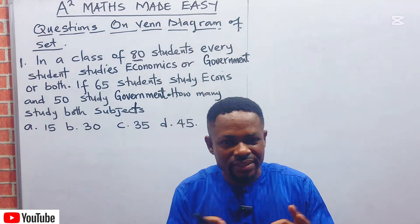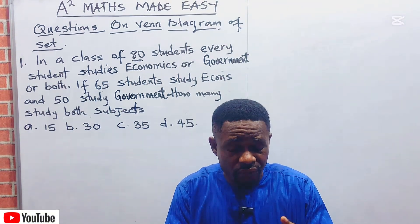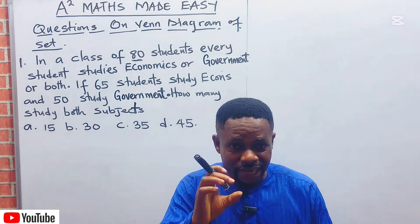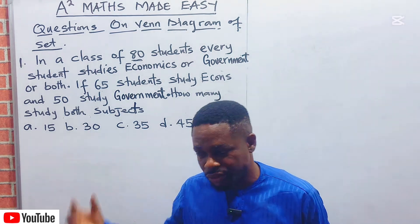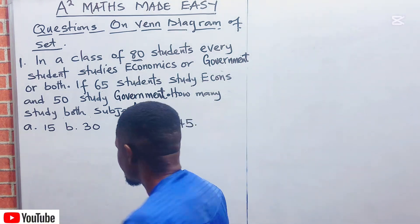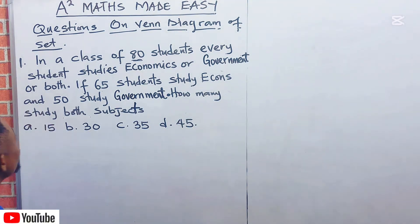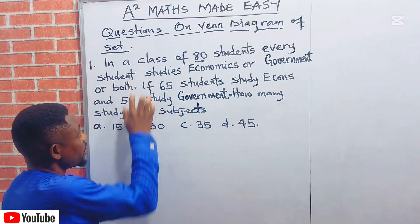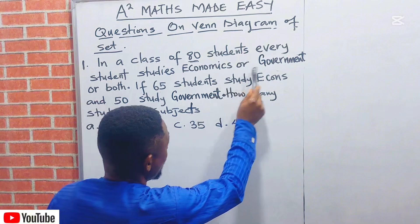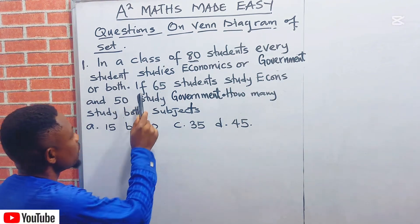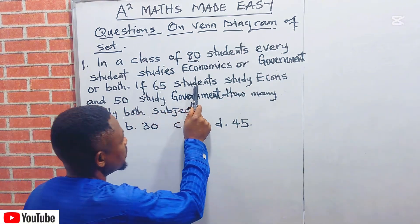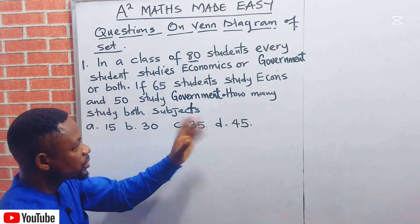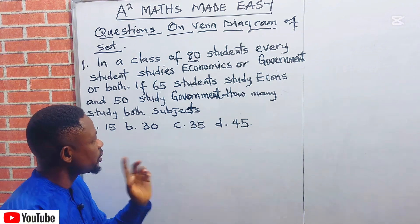We want to know the fastest way or the simplest way of solving a particular problem that has to do with objectives. Once you look at it, the answer will appear immediately. Let's dissolve. The question says, in a class of 80 students, every student studies Economics or Government or both.